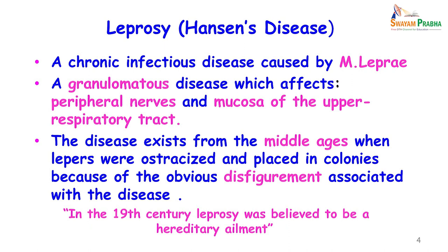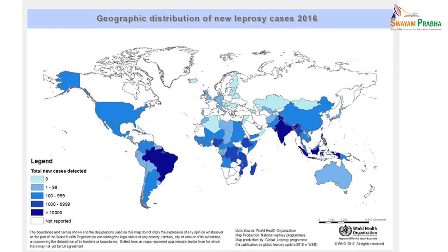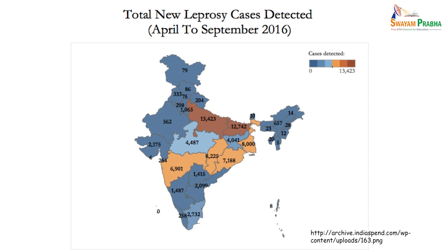In the 19th century, leprosy was believed to be a hereditary ailment. In a country like India, there are still almost more than 10,000 cases of leprosy being reported per year, and these patients are also stigmatized and ostracized by society. The states where it is most commonly found are Uttar Pradesh, Bihar, Maharashtra, Chhattisgarh, Orissa, and West Bengal — these lead in the number of detectable cases of leprosy.